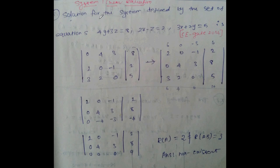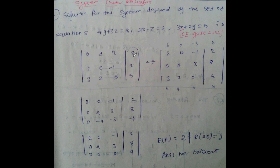Solution for the system defined by the set of equations: 4y plus 3z equal to 8, 2x minus z equal to 2, 3x plus 2y equal to 5. The augmented matrix is: [0, 4, 3 | 8], [2, -1, 0 | 2], [3, 2, 0 | 5].